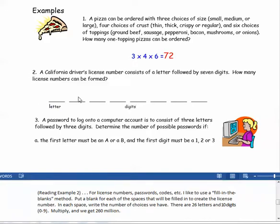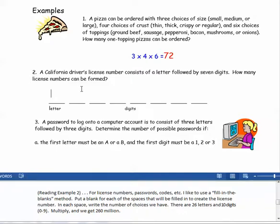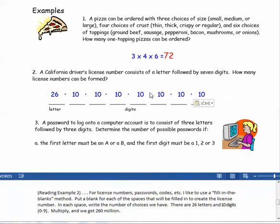In each space, write the number of choices we have. There are twenty-six letters and ten digits. There are twenty-six letters in the alphabet, and the ten digits represent zero through nine. So, multiply those all together, and we get two hundred and sixty million.